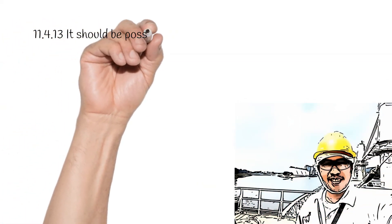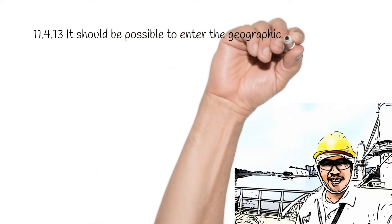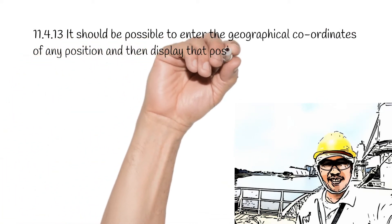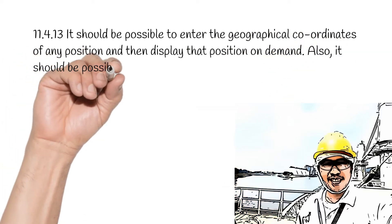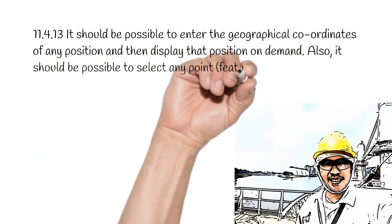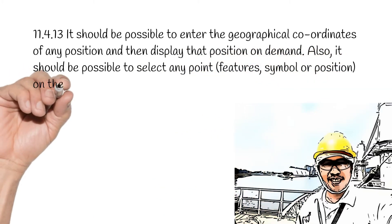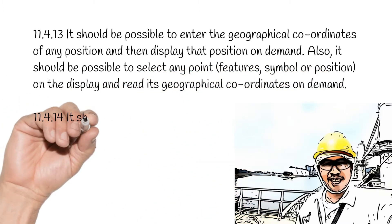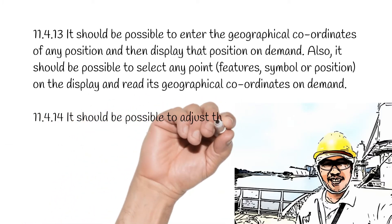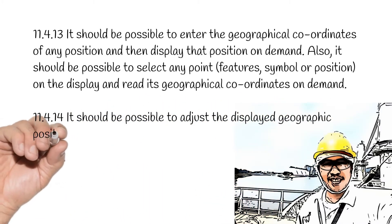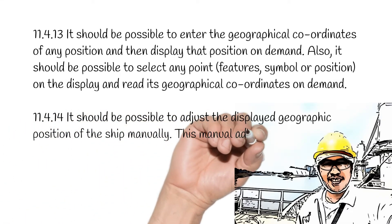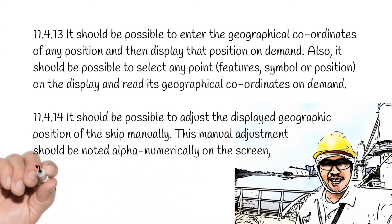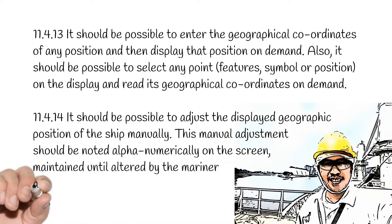11.4.13. It should be possible to enter the geographical coordinates of any position and then display that position on demand. Also, it should be possible to select any point, feature, symbol, or position on the display and read its geographical coordinates on demand. 11.4.14. It should be possible to adjust the displayed geographic position of the ship manually. This manual adjustment should be noted alphanumerically on the screen, maintained until altered by the mariner, and automatically recorded.